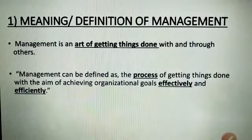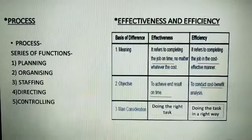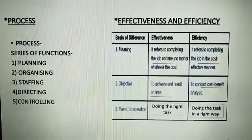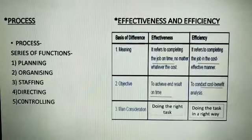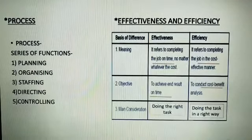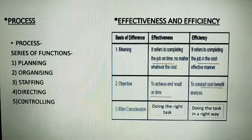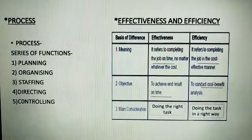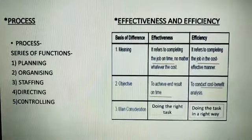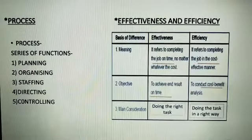Effectiveness refers to completing the job on time. The main objective of effectiveness is to achieve the end result on time. The manager focuses on ensuring that whatever objectives have been set are completed on time. The main consideration of effectiveness is doing the right task — the manager focuses on doing the right task, and that too on time.